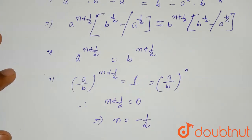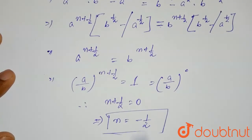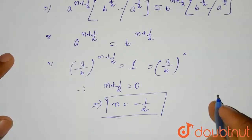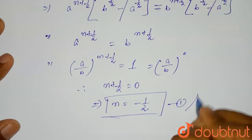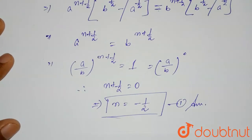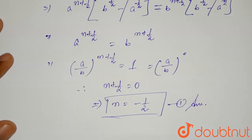So we have found the value of n, which is minus half. This is option 1, and this is the correct answer for this question. Thank you.